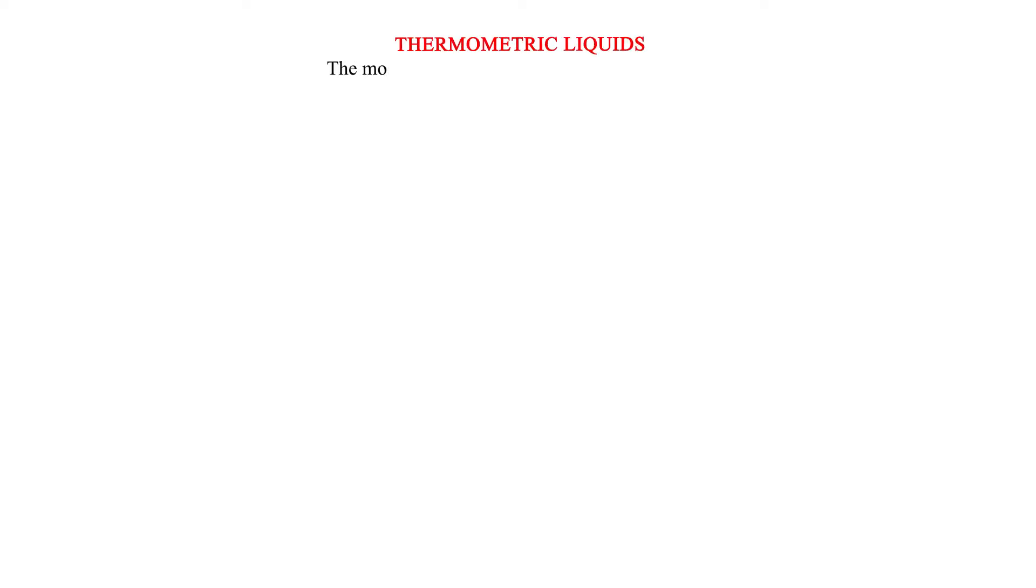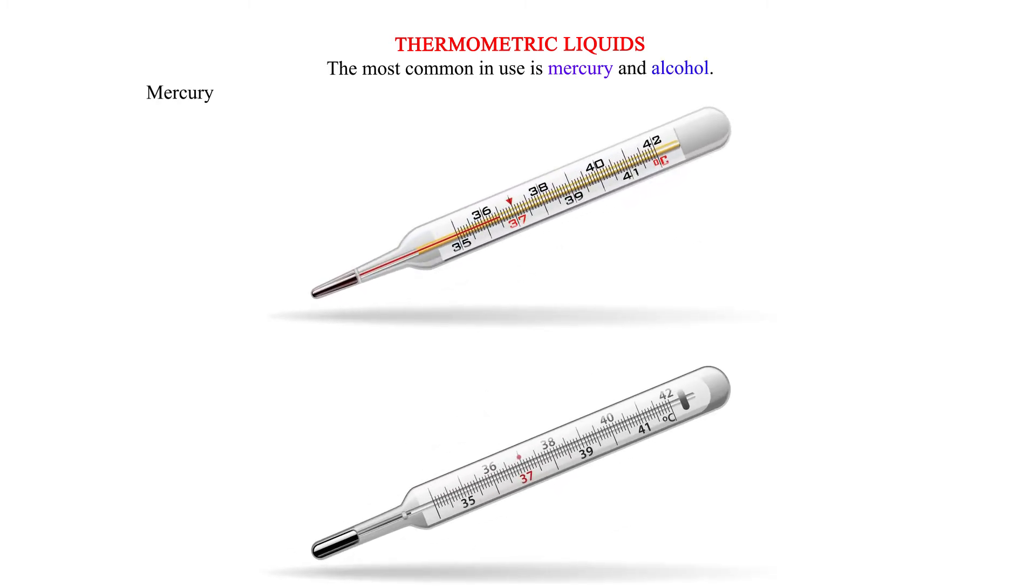Thermometric liquids. The most common in use is mercury and alcohol. Mercury freezes at negative 39 degrees Celsius and boils at 357 degrees Celsius, while alcohol freezes at negative 115 degrees Celsius and boils at 78 degrees Celsius. Alcohol is therefore suitable for measuring temperatures below negative 39 degrees Celsius.